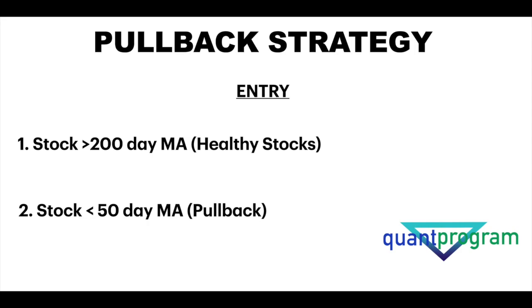The second condition is our pullback condition. When the stock pulls back, we need to enter. I'm using the 50-day moving average for this. You can use 20, 10, or 30 — it's up to you — but I want a deeper pullback so I have more upside potential. A 10-day MA gives a smaller pullback and less upside potential, whereas a 50-day MA gives a larger pullback and higher upside potential. So the stock has to trade above the 200-day MA and below the 50-day MA.